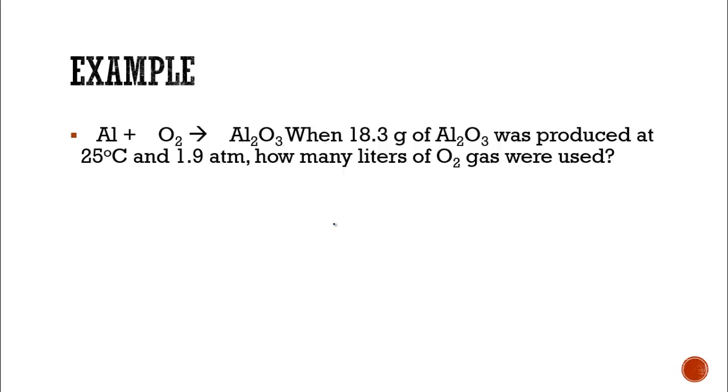In our first example, you can see we have an equation. The first thing we need to do is balance it. I've got three O's here and two here. To balance it, I can do three and two. Two times two is four aluminum, and I have four aluminum. Now I am going to go through and figure out what I need. I have 18.3 grams of Al2O3. It was produced at 25 degrees Celsius and 1.9 atmospheres. How many liters of O2 gas were used?